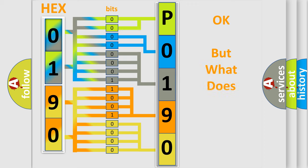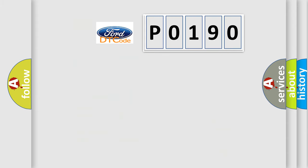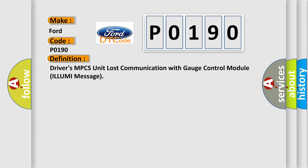The number itself does not make sense to us if we cannot assign information about what it actually expresses. So, what does the Diagnostic Trouble Code P0190 interpret specifically for Infiniti car manufacturers? The basic definition is: Drivers MPCS unit lost communication with gauge control module — ILLUMI message.